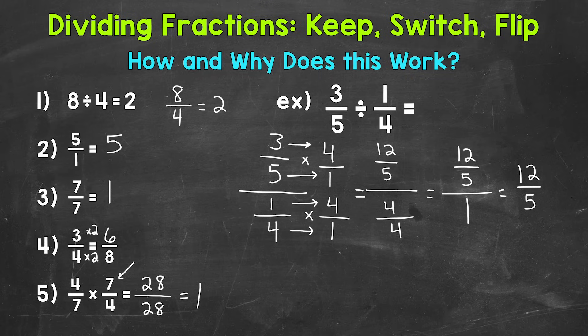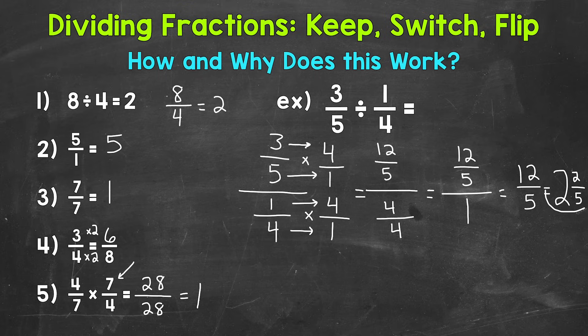Now 12 fifths is an improper fraction, so we convert it to a mixed number by dividing the numerator by the denominator: 12 divided by 5. How many whole groups of 5 can we pull out of 12? That's 2, with a remainder of 2, and we keep our denominator of 5. So 2 and 2 fifths is our answer for 3 fifths divided by 1 fourth.